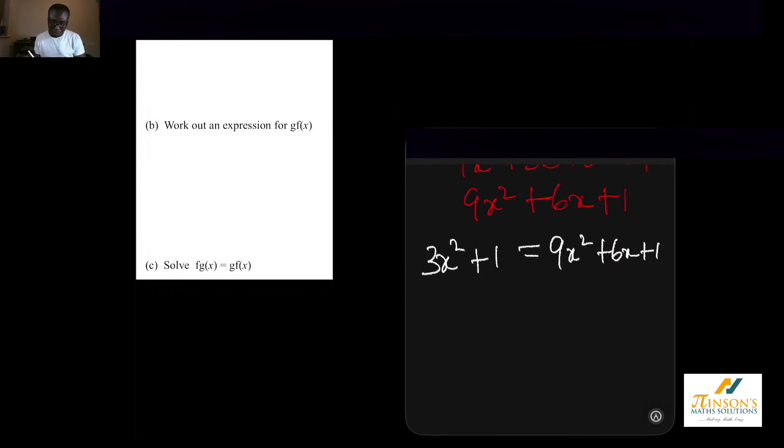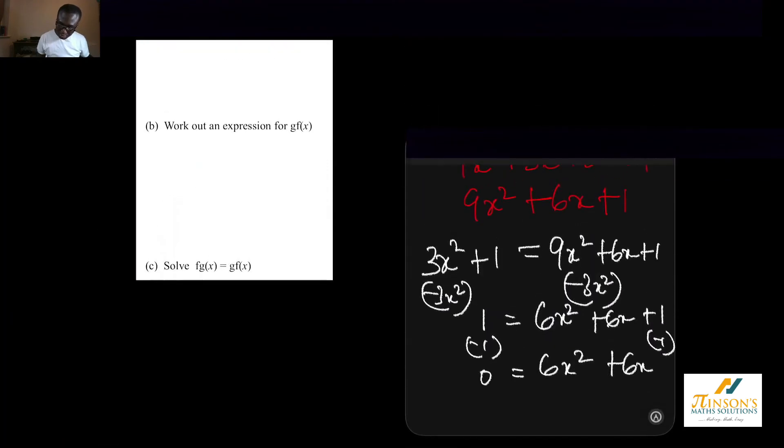So that means I have to solve 3x squared add 1 equals 9x squared plus 6x plus 1. When we solve quadratic equations, we want to make sure we move everything to one side so that there is a 0 on the other side. If we minus 3x squared from both sides and minus 1 from both sides, that gives us 0 equals 6x squared add 6x.